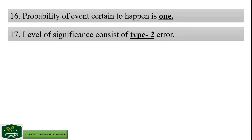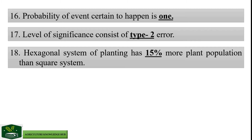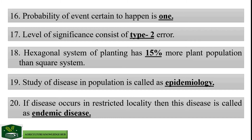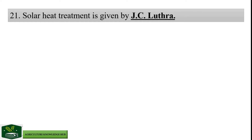Hexagonal system of planting has 15% more plant population than square system. Study of disease in population is called epidemiology. If disease occurs in restricted locality, then this disease is called endemic disease. Solar heat treatment is given by J.C. Luthra.